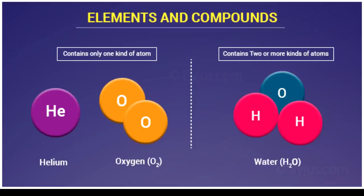Water is made of two hydrogen atoms and oxygen atoms — they are different kinds of atoms. When you have two or more different types of atoms, you have a compound.